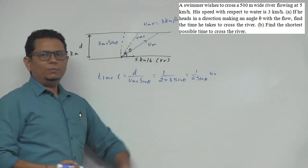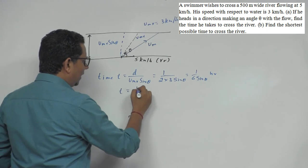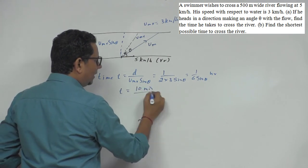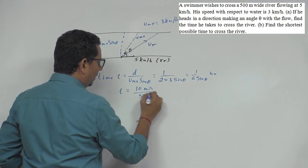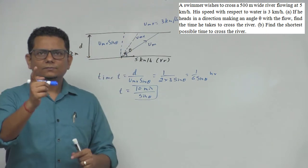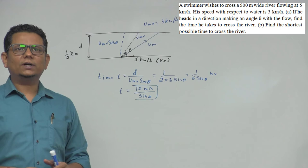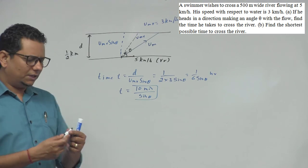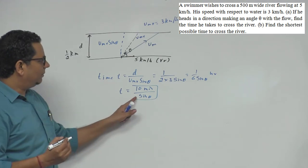If we convert to minutes, then we can write time T which will be 10 minutes divided by sine theta. This will be your answer - this much time it will take to cross from here.